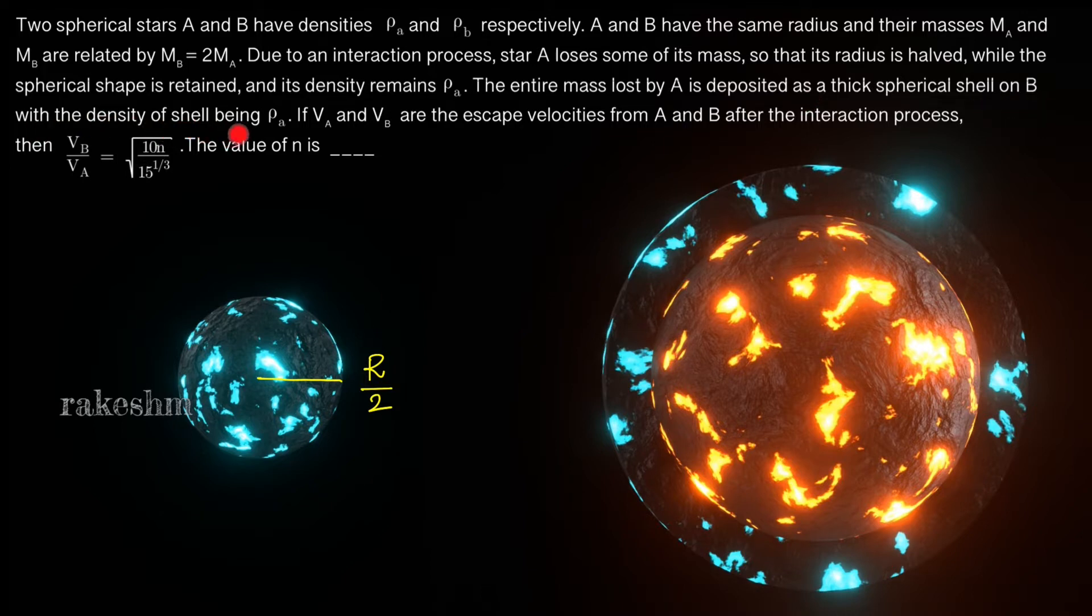So the mass which is lost by this which is deposited here has a density ρ_A. If V_A and V_B are the escape velocities from A and B after this interaction process, then the ratio of these escape velocities equals √(10n/15)^(1/3). The value of n is ___.